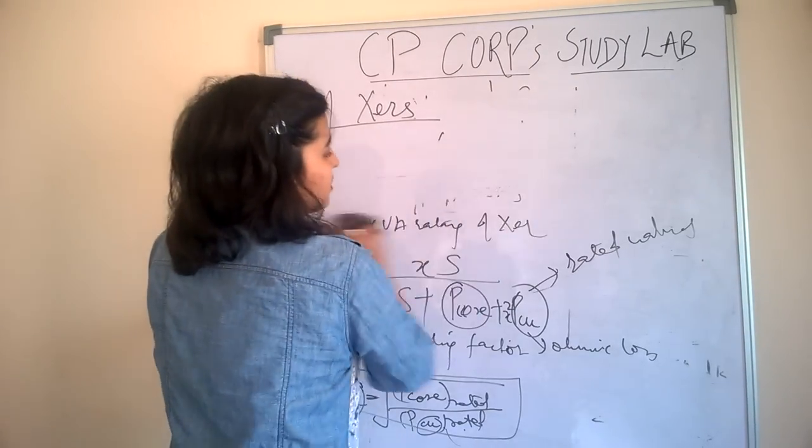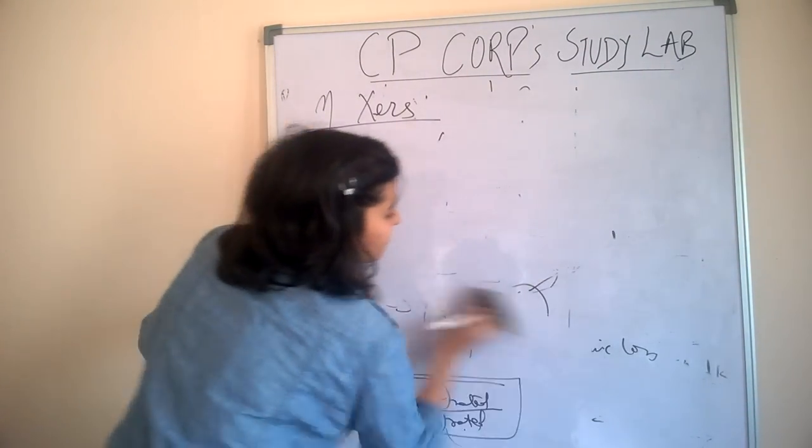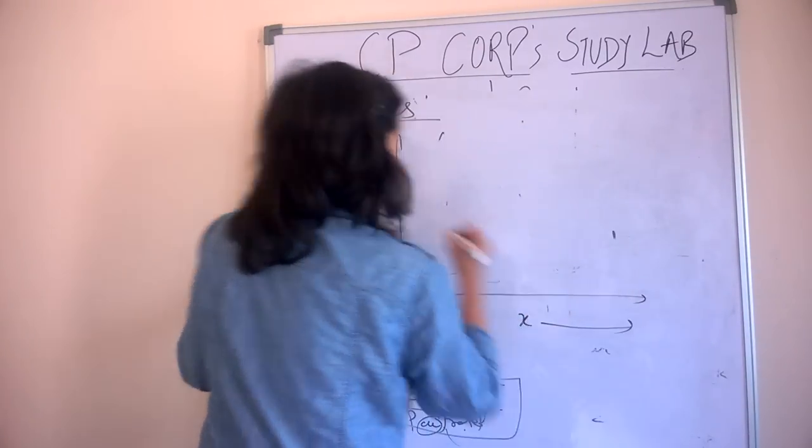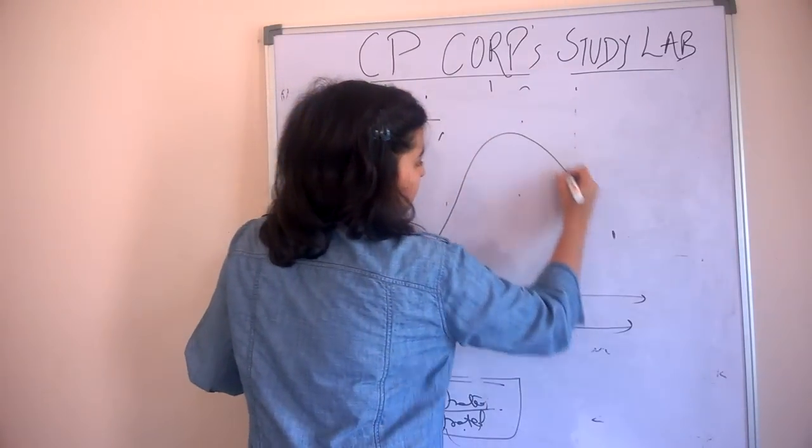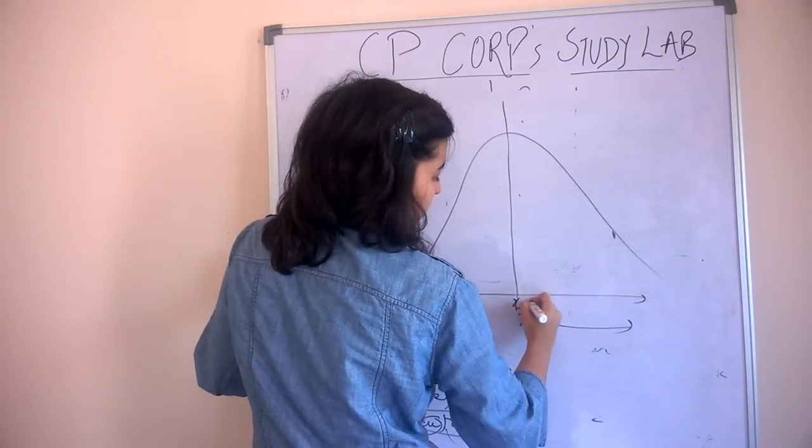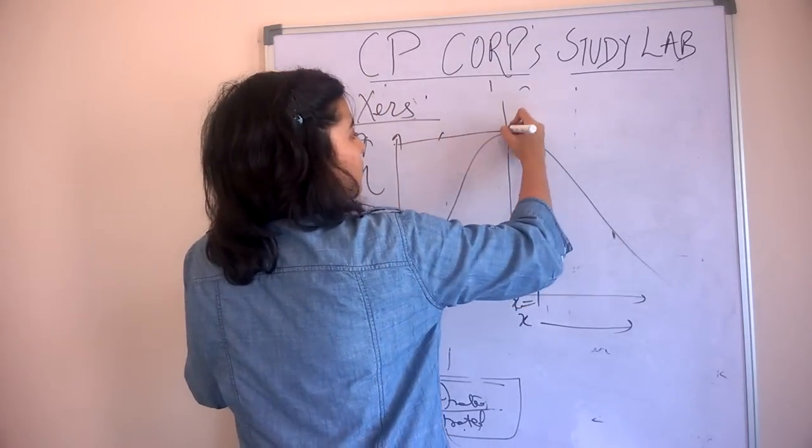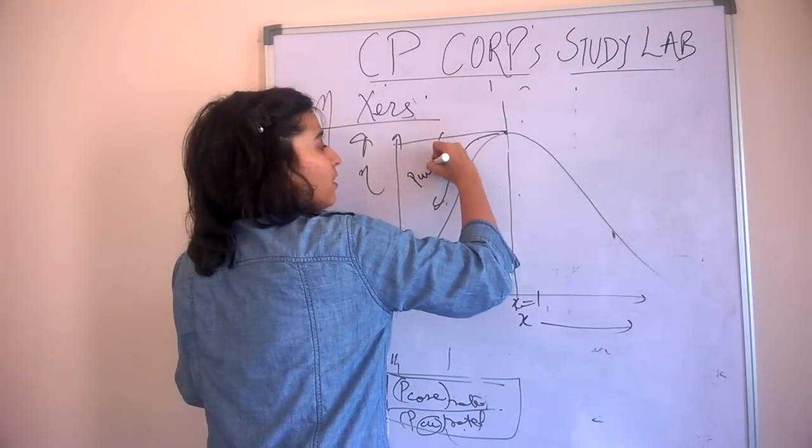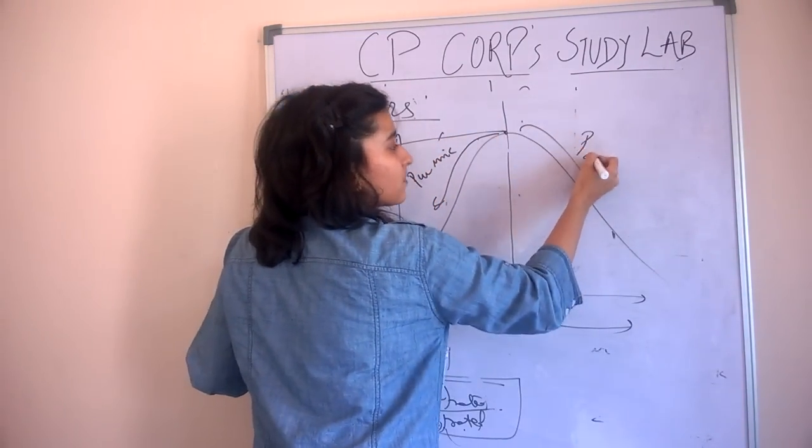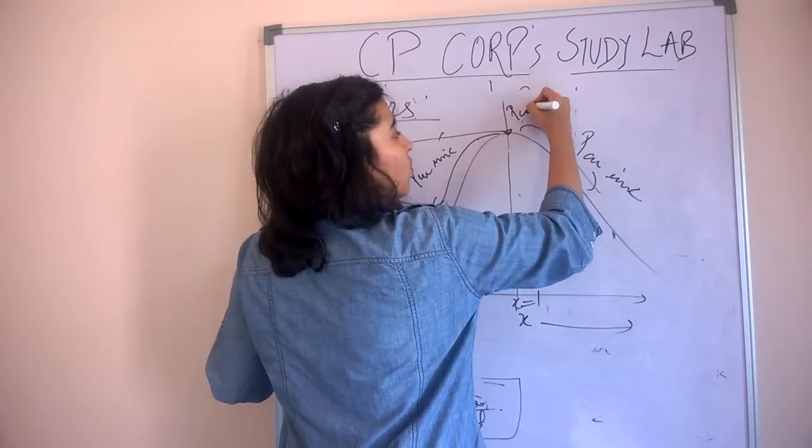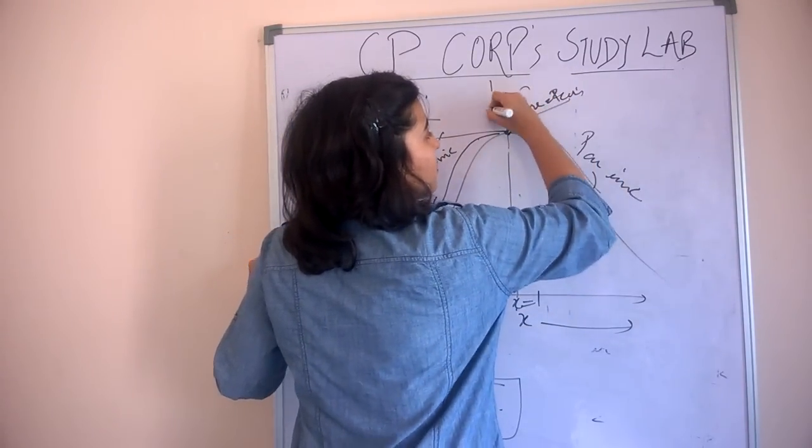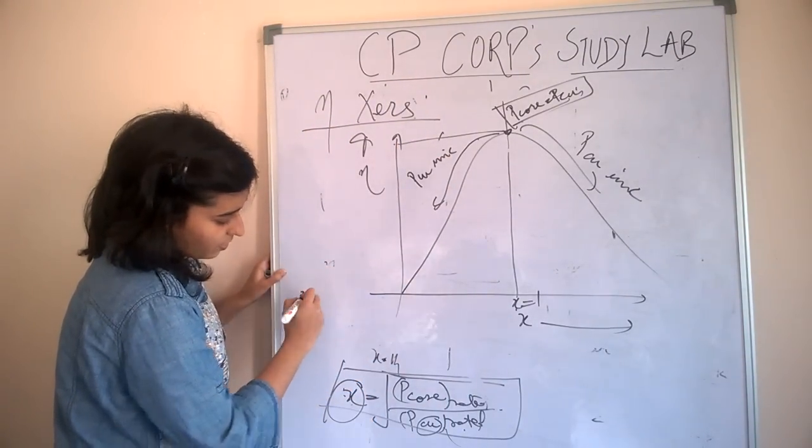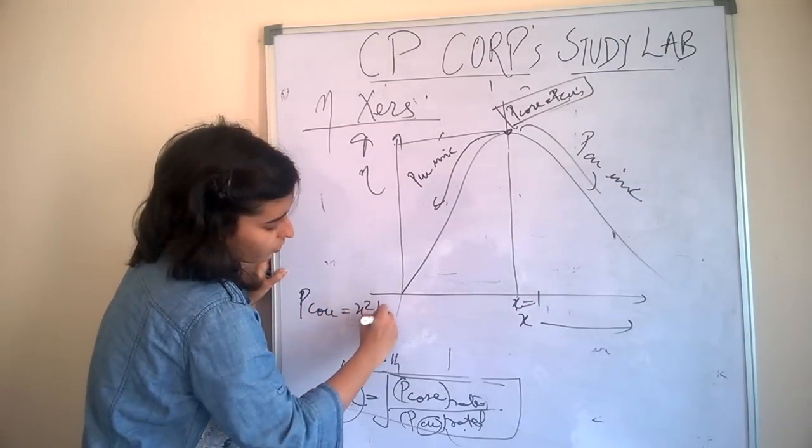And the curve of efficiency: this is x = 1, here efficiency is maximum. When we go from this point to this point, efficiency increases. This means Pcopper increases on both sides. At this point, Pcore = Pcopper. This is the condition of maximum efficiency. When there is maximum efficiency, Pcore is always equal to Pcopper.